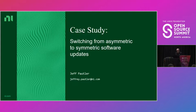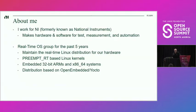It's 4:35, so I think we'll go ahead and get started. Thank you guys for sticking around late in the day for my presentation. I'll be presenting on my group's experiences in switching from an asymmetric to a symmetric software update model. I work at NI, which is focused on making hardware and software for test, measurement, and automation applications. For the last five years, I've been a member of the real-time OS group at NI, where we maintain a real-time Linux distribution for our hardware systems. By real-time, I mean primarily that it has a kernel with the preempt RT patch set applied. We're generally developing for 32-bit ARM systems and x64 systems, and the distribution we build is based on OpenEmbedded and Yocto.